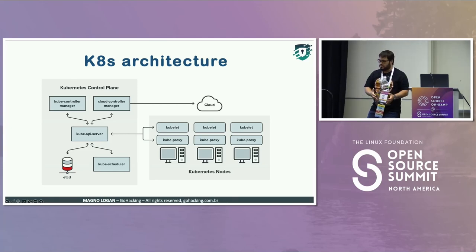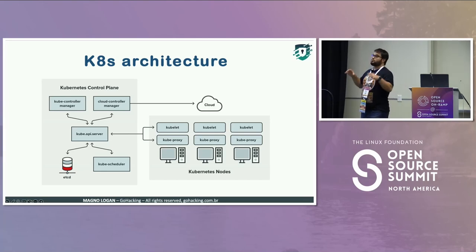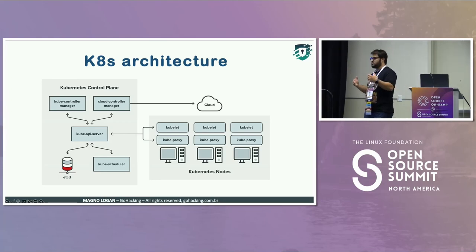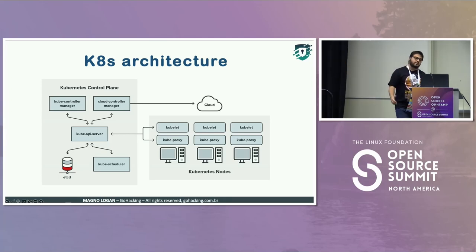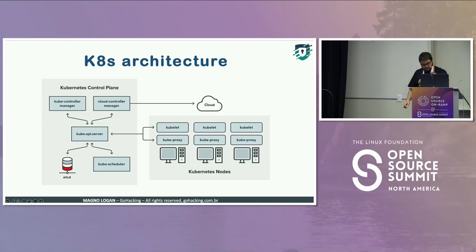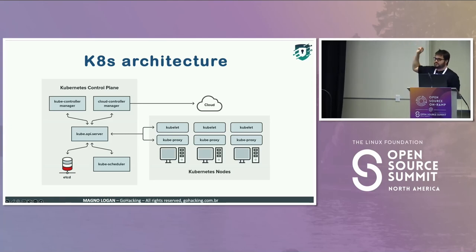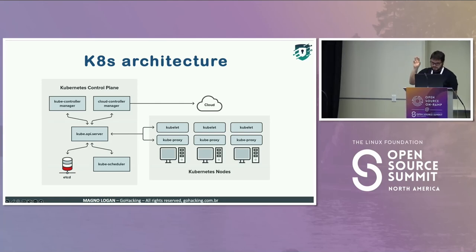If there's no difference, nothing needs to happen. If there is a drift — a difference — then Kubernetes needs to make changes: take down some containers or add more replicas. Everything is driven by etcd. And etcd also has its own API, so now we have two APIs: the Kube API server and the etcd API — and we'll talk about that soon.